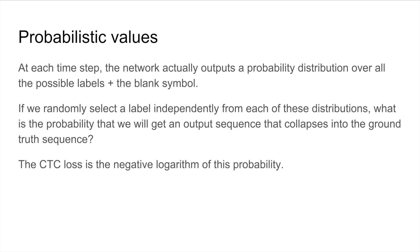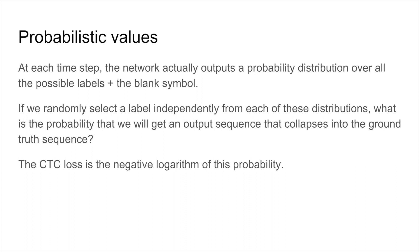Okay, so what we saw is that the network outputs a probability distribution over all the possible labels and the blank symbol. The idea is that if we sample from all these distributions independently, we want to maximize the probability that we would get an output sequence that collapses into the ground truth. So the idea is that this loss is really just the negative logarithm of the probability that I just described. So we can describe what we've been talking about a little bit more formally. So let's let L be the set of labels, and L' be the set of labels that include the blank. So for a sequence t, we can now denote the set of possible paths as pi, where the size of pi is L' to the t.